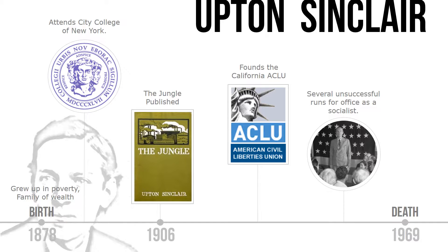Who is Upton Sinclair? Born in 1878 in Baltimore, Maryland, Sinclair's father was a liquor salesman and an alcoholic. As he was growing up, Upton's family moved frequently as his father was not successful in his career. Upton developed a love for reading when he was just five years old. His mother was religious and strict. Sinclair did not start school until he was 10 years old. Sinclair's grandparents — his mother's parents — were wealthy and he often stayed with them. He began writing to help pay for his college expenses.